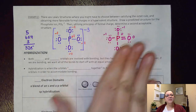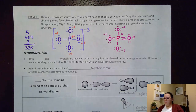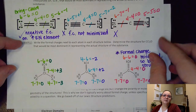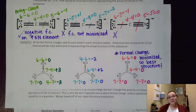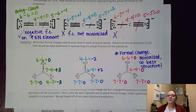Hopefully we're feeling more confident with formal charge. The more likely thing you'd be asked to do is assign formal charges and pick the best structure from given options, like we did earlier — not necessarily the expanded octet scenario. If you have any questions or need help, please feel free to email me. Bye guys.